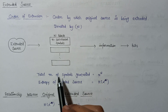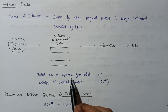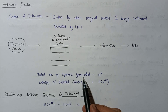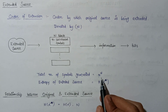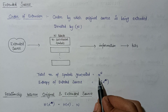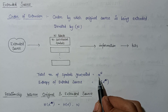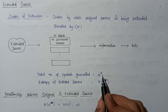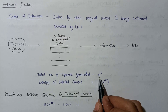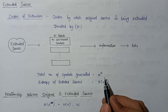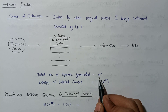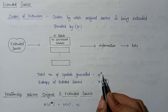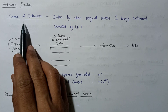The number of symbols generated by the extended source can be calculated by the expression n to the power capital N, where lowercase n is the number of symbols emitted by the original source and capital N is the order of extension.